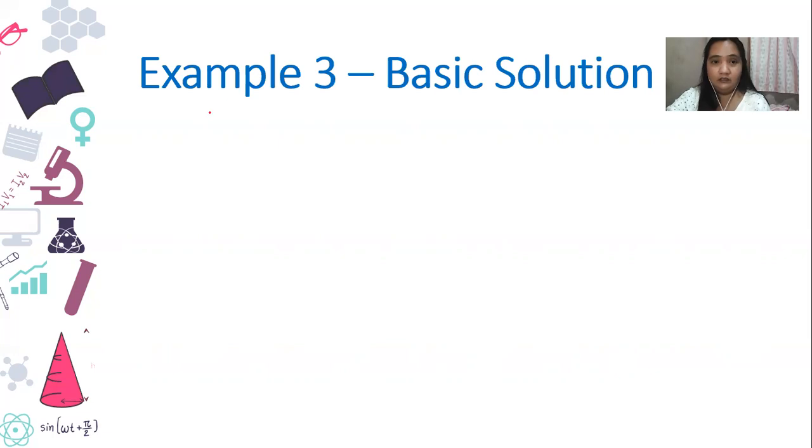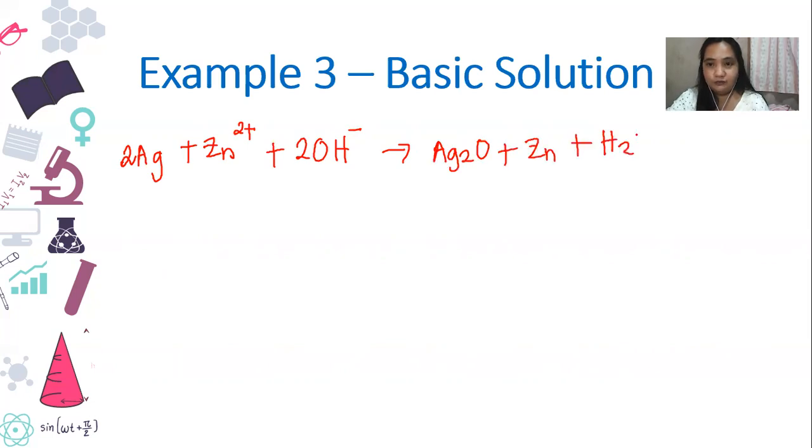So our final answer is 2Ag plus zinc 2 positive plus 2OH negative yields silver oxide plus zinc plus H2O. Let's check. First, let's list the elements in the given reaction. We have silver. We have zinc. We have oxygen. We have hydrogen. And then we have our reactant. We have our product side.